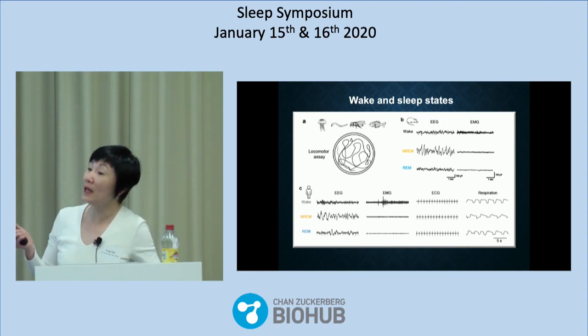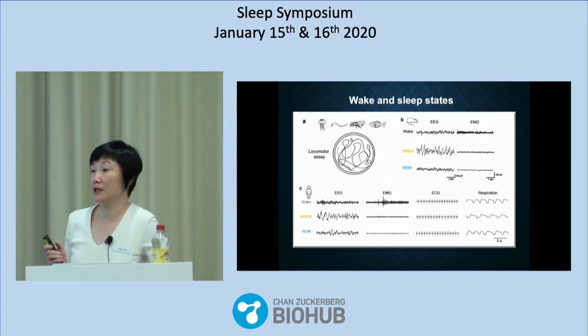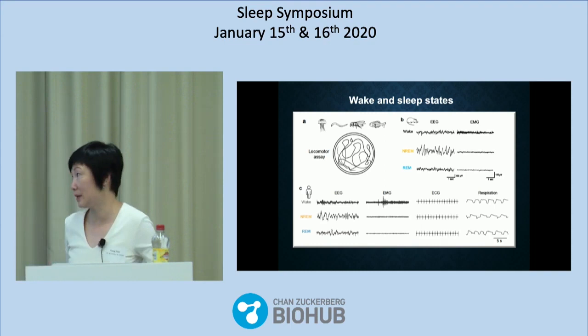For mammalian animal studies, we measure EEG and EMG. So during sleep, there's a clear reduction of skeletal muscle tone. And then based on EEG, we can distinguish REM and non-REM sleep.